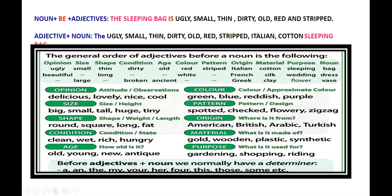Before adjectives, we normally have a determiner: a, an, the, my, your, his, for, these, those, some, etc. Normally before adjectives we carry a determiner. And someone mentioned short black hair — the correct order should be short first (size), then black (color): short black hair. That's the right order. All colors are adjectives.